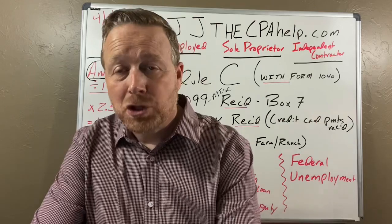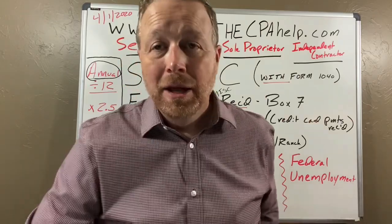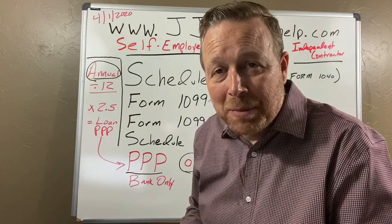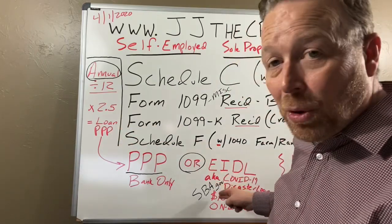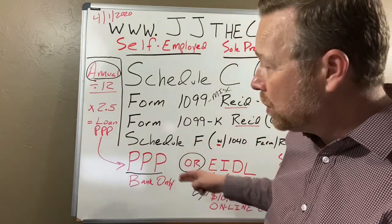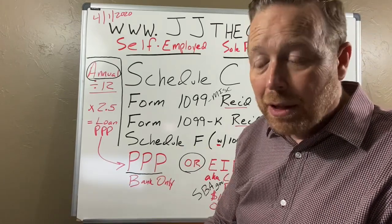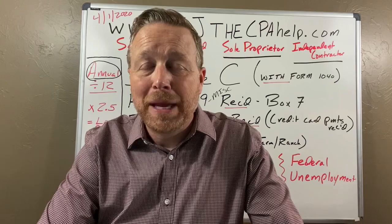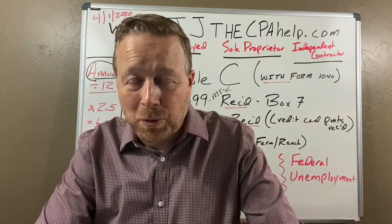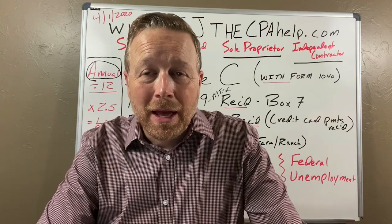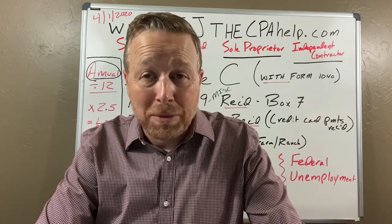Now here's the catch: the PPP is a forgivable loan. You might think, 'Who cares, because the EIDL $10,000 you never have to pay back.' But of the $15,000 you receive from the PPP after the subtraction, only $5,000 of it is possibly forgivable. The remaining $10,000 of that PPP will not be forgiven and you'll have to pay it back.